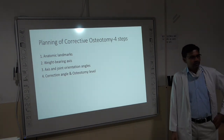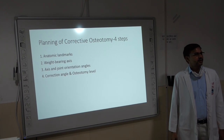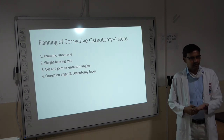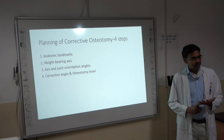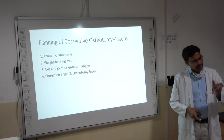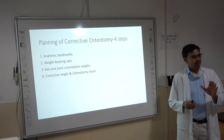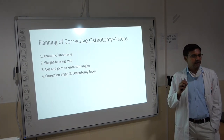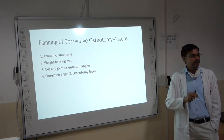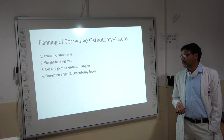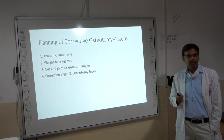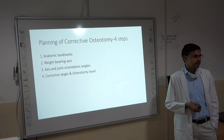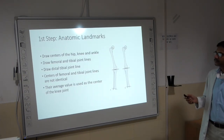Planning of corrective osteotomy: it is not essential to do corrective osteotomy all the time — you can do gradual correction with an external fixator like ILIZAROV or LRS, or gradual correction by growth modulation. There are four steps in deformity correction planning: first, know the anatomic landmarks; second, determine the mechanical axis of the limb (weight-bearing axis); third, draw the axis and joint orientation angles; and fourth, determine the correction angle and osteotomy level.